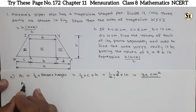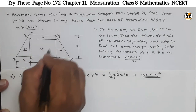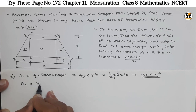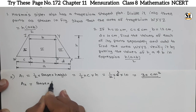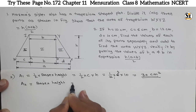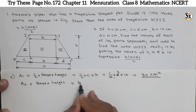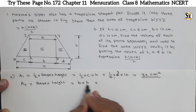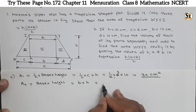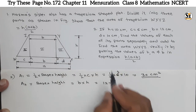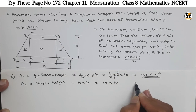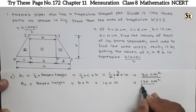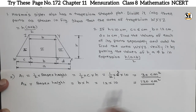Similarly, A2 is the area of the second figure — the rectangle. That will be base into height. Base is B and height is H. B is given as 12 cm and H is common, which is 10. So A2 = 12 × 10 = 120 cm².